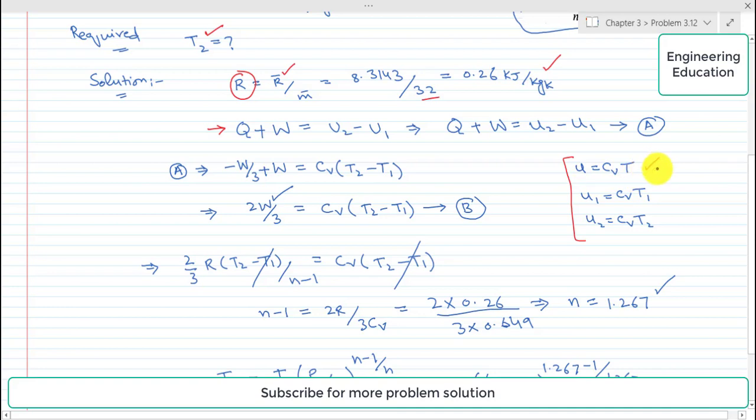Similarly, for state 2, this is U2 is equal to Cv into T2. So when we take the difference of U2 minus U1 we get Cv into T2 minus T1.